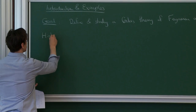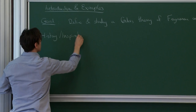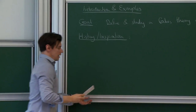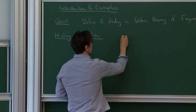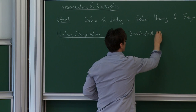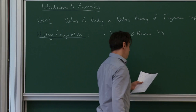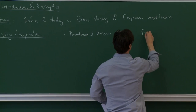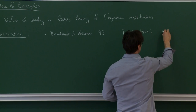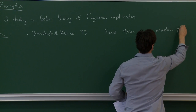And I should really mention my intellectual debt. The inspiration — the story behind this is quite a long one — but I believe it started off with calculations due to Broadhurst and Kreimer in the 90s, in particular in 1995, who found multiple zeta values as amplitudes in massless phi-4 theory.